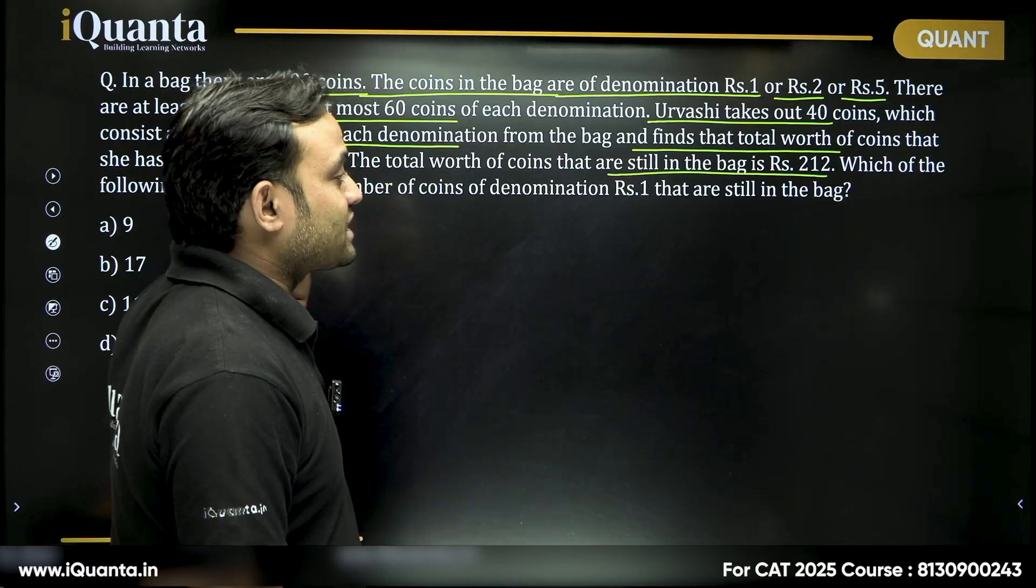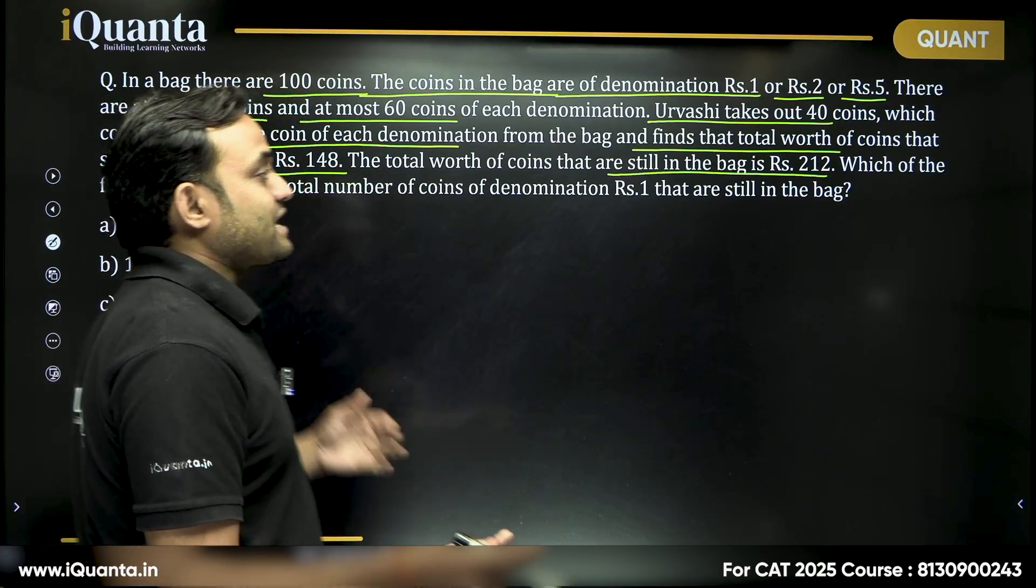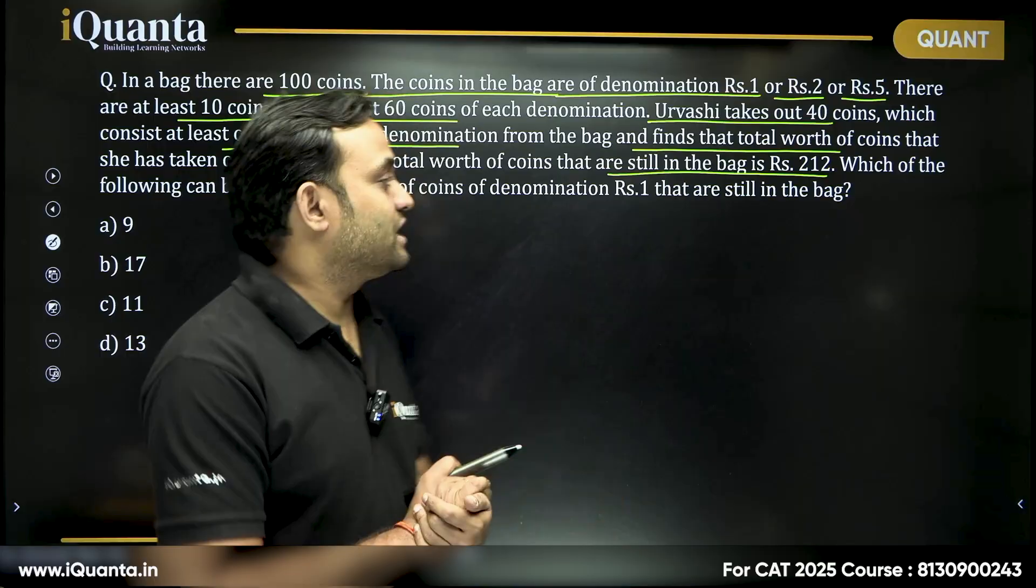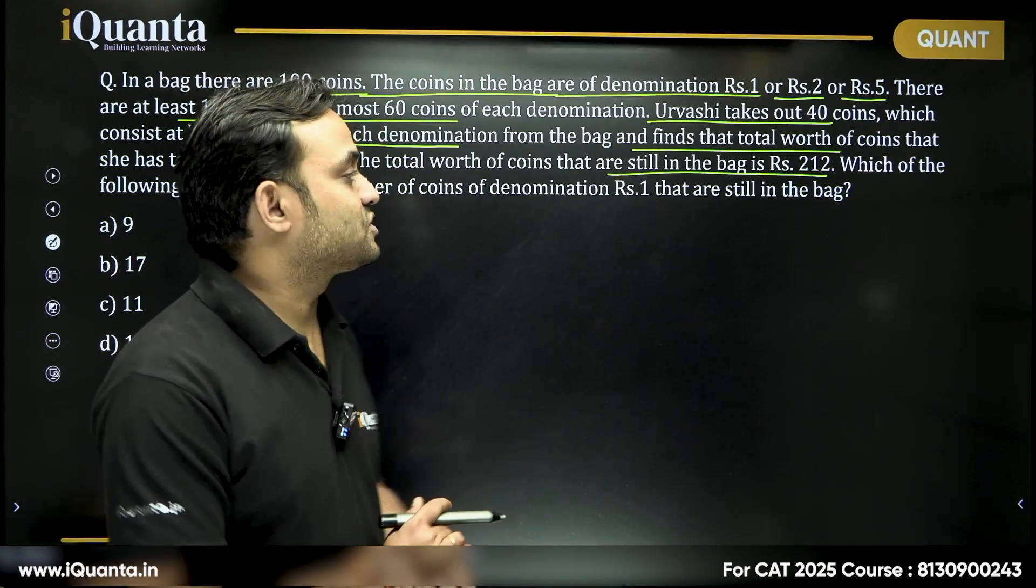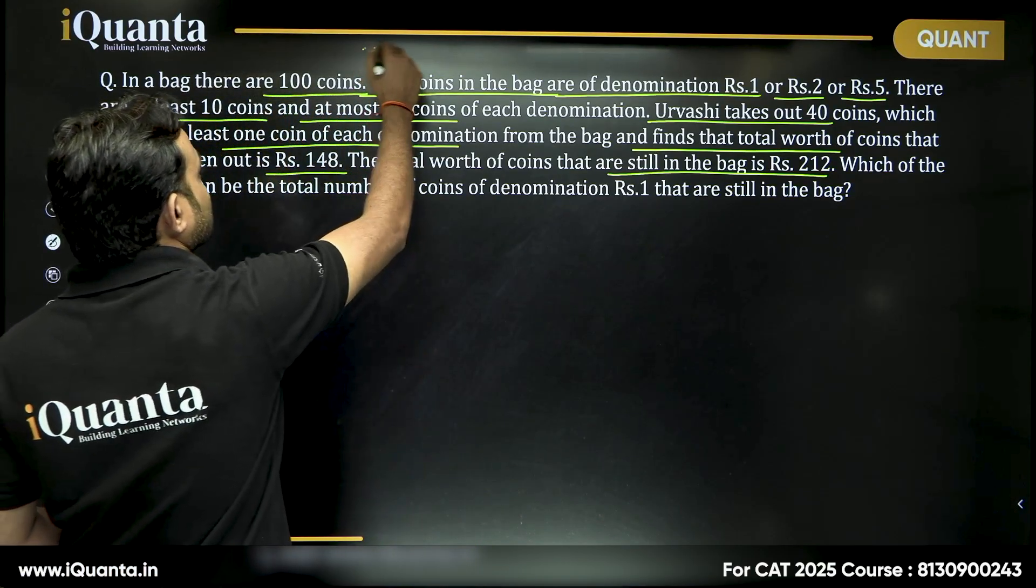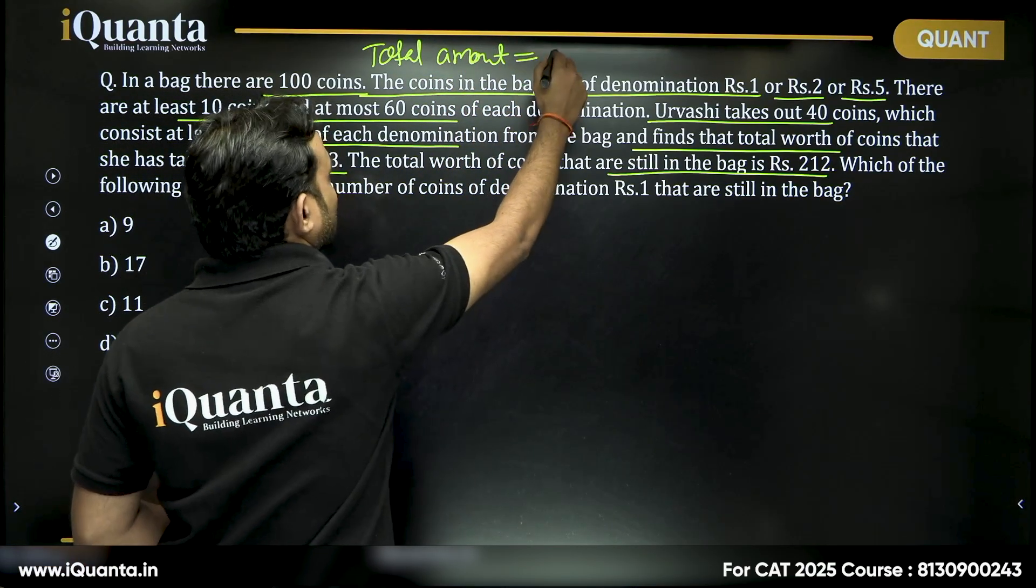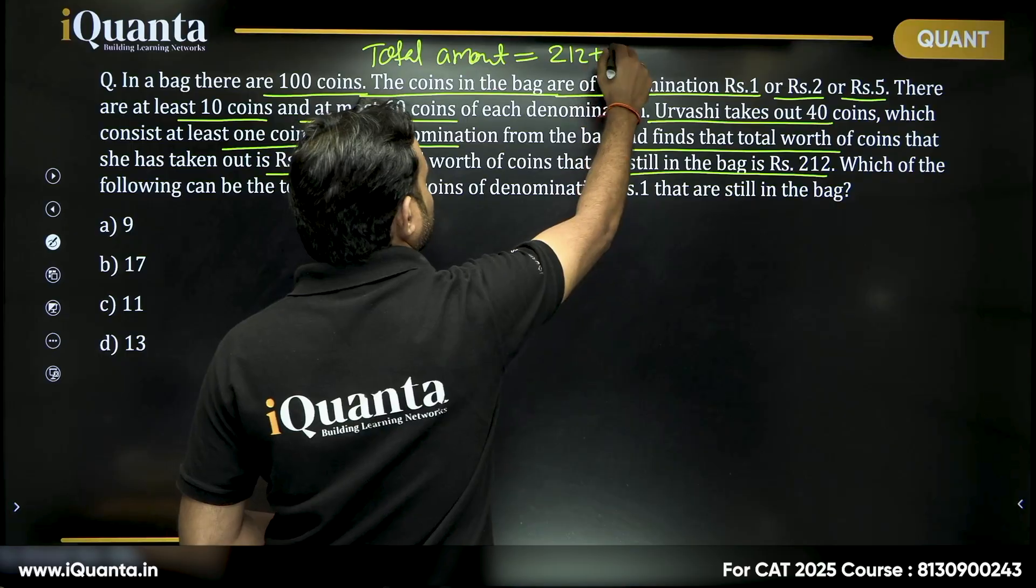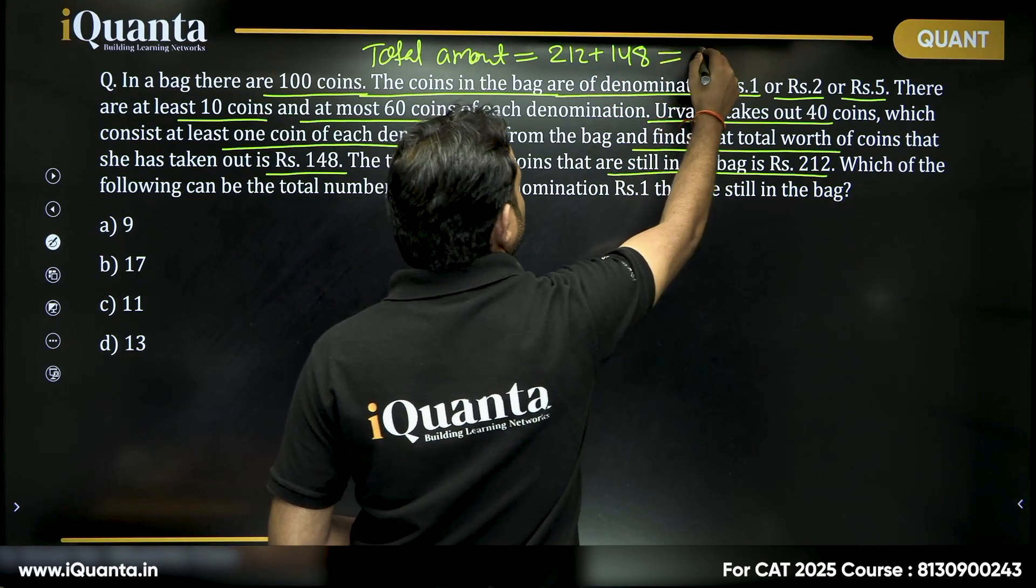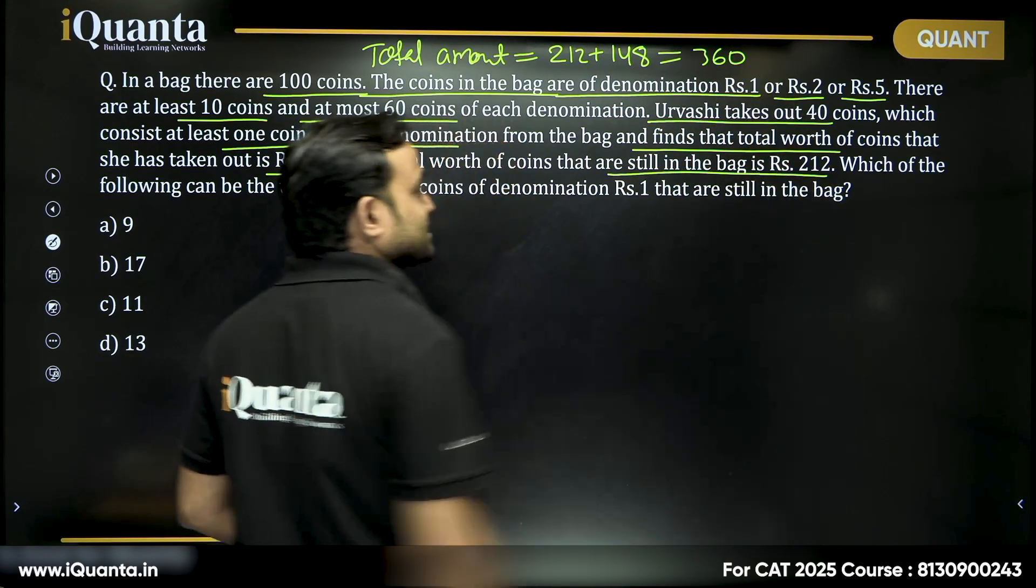So what can we say? She taken out 148 rupees, she is still left with 212. So total amount that we have here is equal to 212 plus 148 which is equal to 360 rupees.